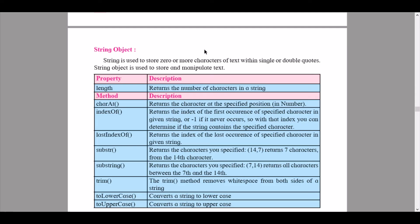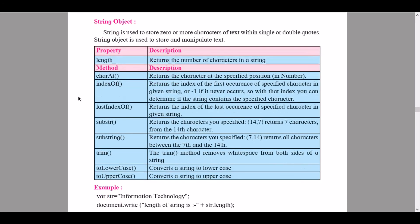'lastIndexOf' returns the index of the last occurrence of a specified character in the given string. 'substr' returns the characters from a specified position — for example, (14, 7) returns 7 characters from the 14th character. 'substring' returns all characters between two specified indices — for example, (7, 14) returns all characters between the 7th and 14th. The 'trim' method removes white space from both sides of a string.